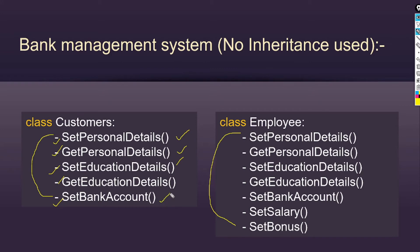The fifth method is set bank account, used for creating bank accounts for customers. In the employee class, we have the same methods: set personal details, get personal details, set education details, get education details, and then set bank account — but this method's functionality is slightly different, because the bank creates special accounts for employees with facilities not given to customers. So the name is the same but the functionalities are different.